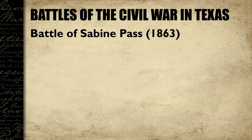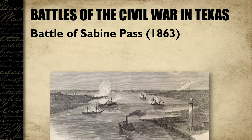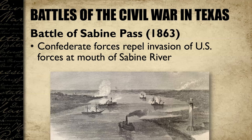The second major Civil War battle fought in Texas was the Battle of Sabine Pass in 1863. Sabine Pass was basically the mouth of the Sabine River, which forms the border between Texas and Louisiana. The battle happened right at the mouth and partway up the river. The Confederate forces repelled an invasion by U.S. forces — the United States Navy tried to send ships and soldiers up the Sabine River to invade Southeast Texas. The Confederate forces successfully repelled that invasion, making it a significant victory for the Confederate Army in Texas.